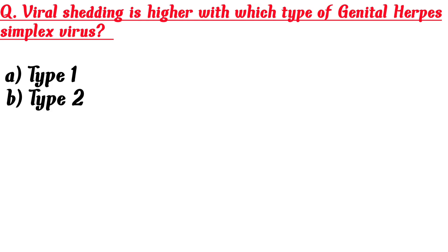Virus shedding is higher with which type of genital herpes simplex virus? A. Type 1, B. Type 2. Answer is Type 1.